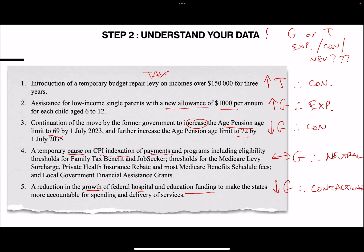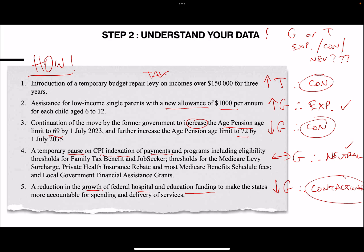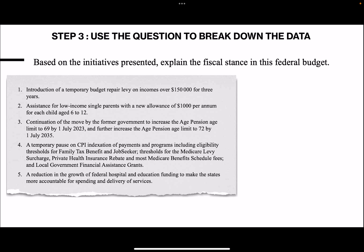Now at this point, these five points equal the 'how' - here is our evidence to back up what they're doing. But now we have to start to draw some conclusions. What are we doing? We can see that there's contractionary, contractionary, contractionary, then one expansionary, one neutral. On balance, the government is probably going into a contractionary overall fiscal stance. So based on the initiatives presented, the fiscal stance is contractionary overall. There's your nice strong opening sentence.